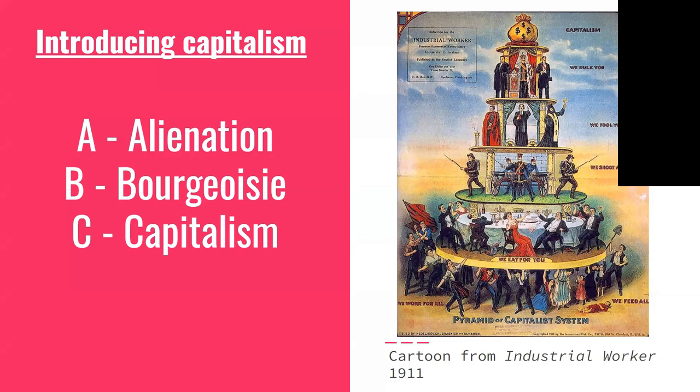C is for capitalism — a system where the means of production are concentrated in the hands of a small number of people and the vast majority of people have to sell their labor in order to earn a living. Everything produced under capitalism is a commodity — made solely to be sold for profit — and that profit reinvested to produce more commodities in an endless cycle. An endless churn of growth is necessary because each capitalist is competing with other capitalists, and if they do not stay ahead they won't survive. The result is a chaotic, unplanned system driven by profit and ravaged by periodic crises — so this could also be C for crisis.